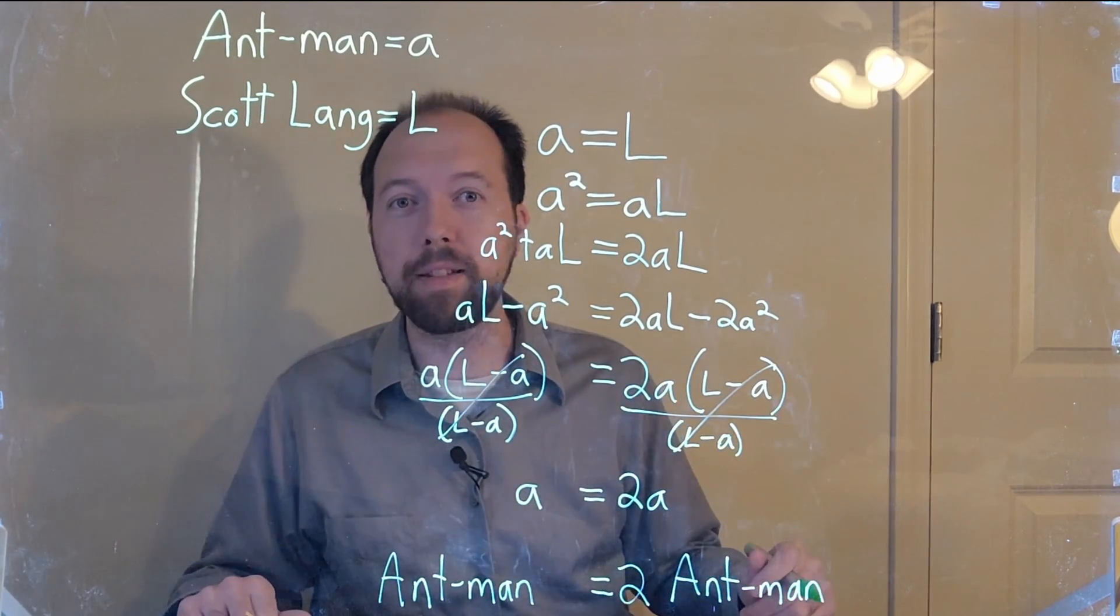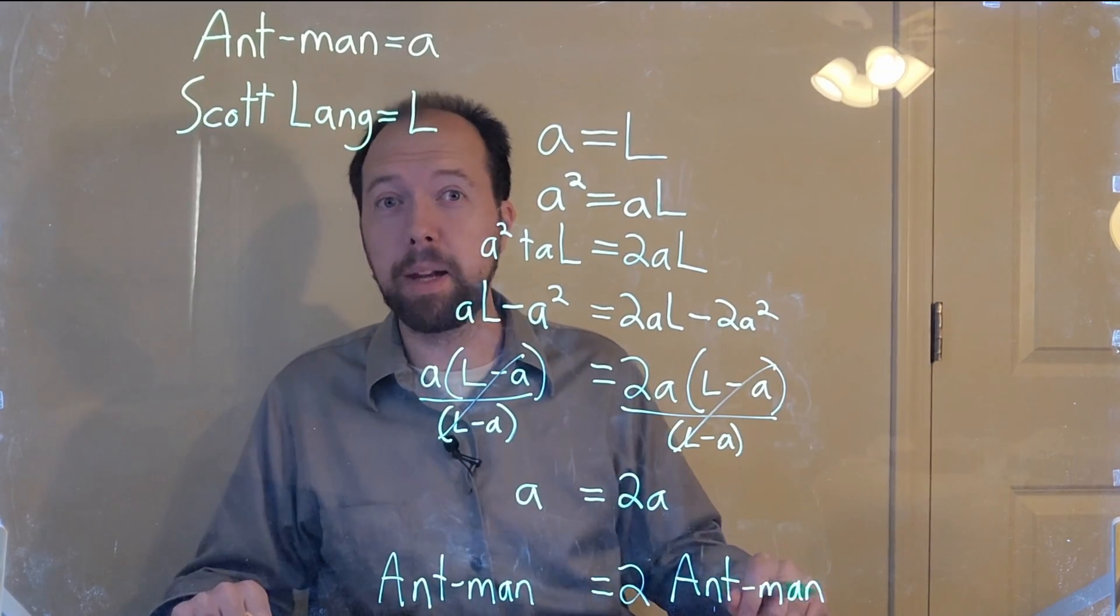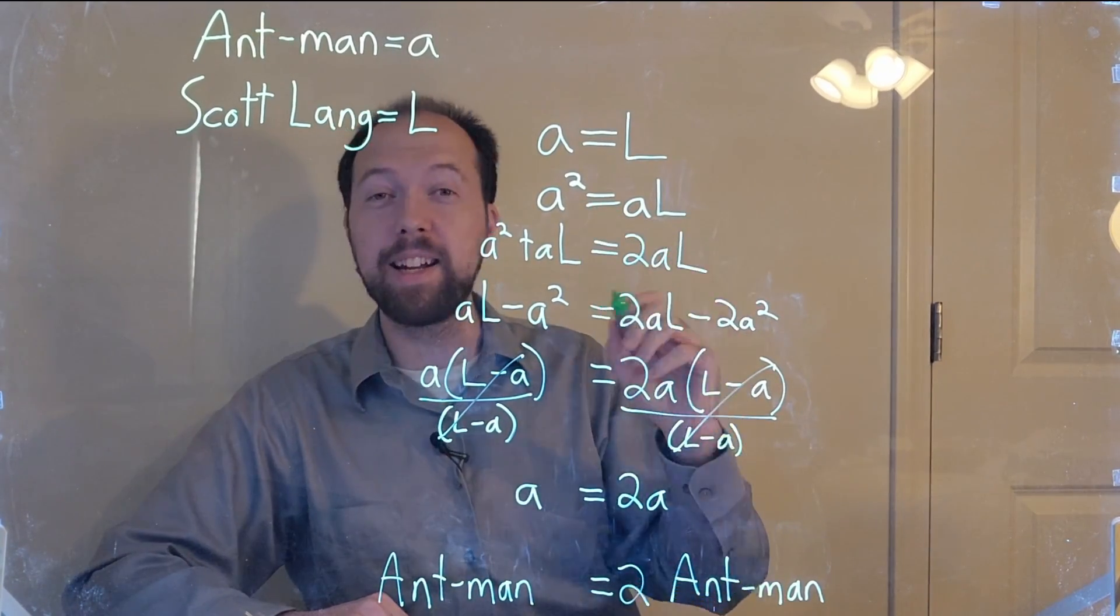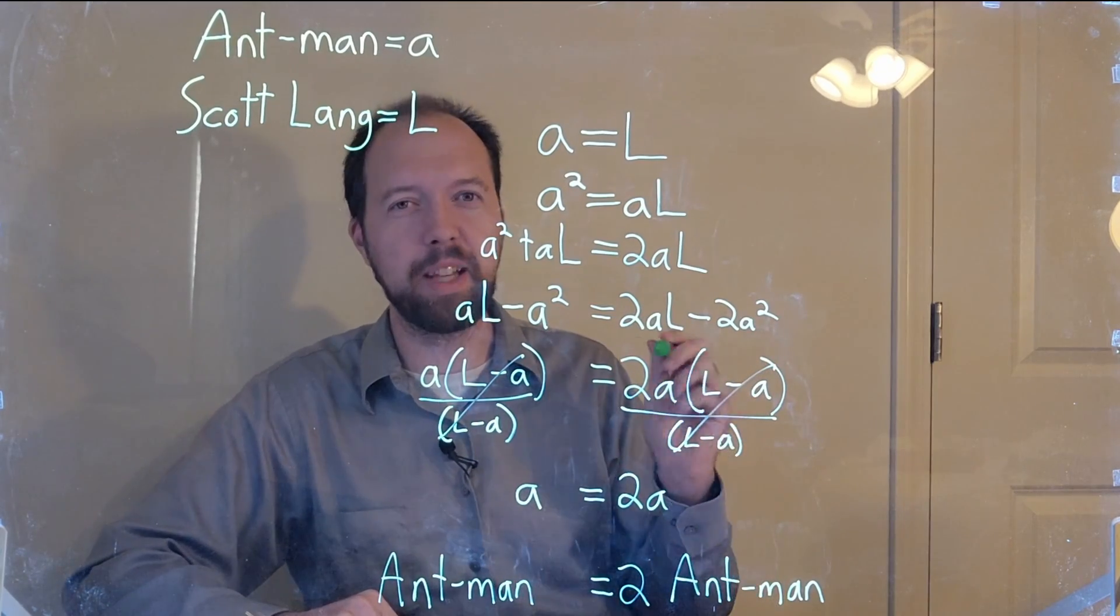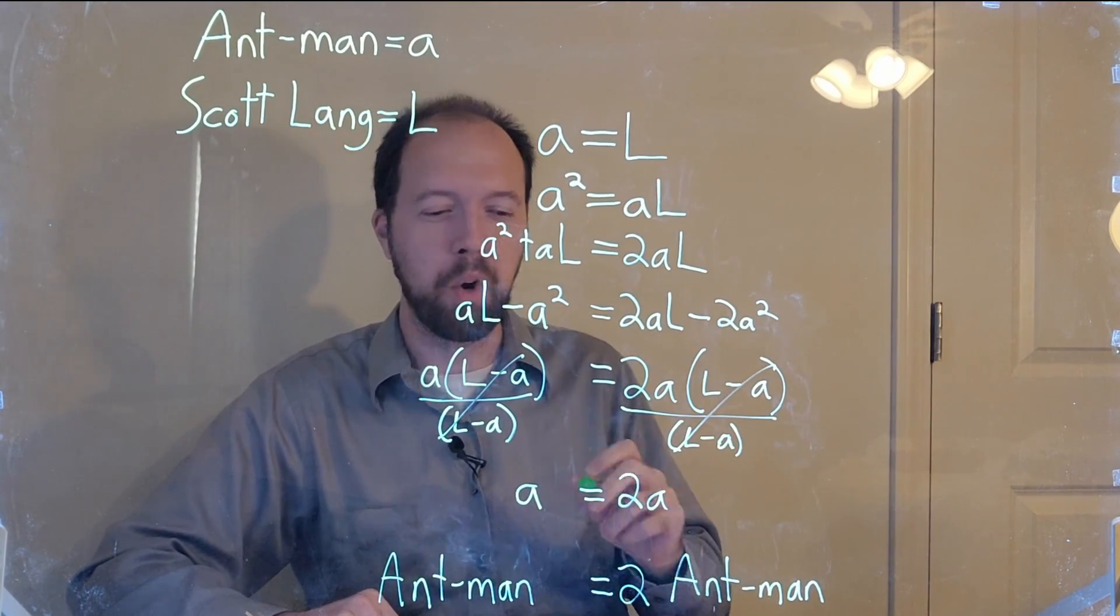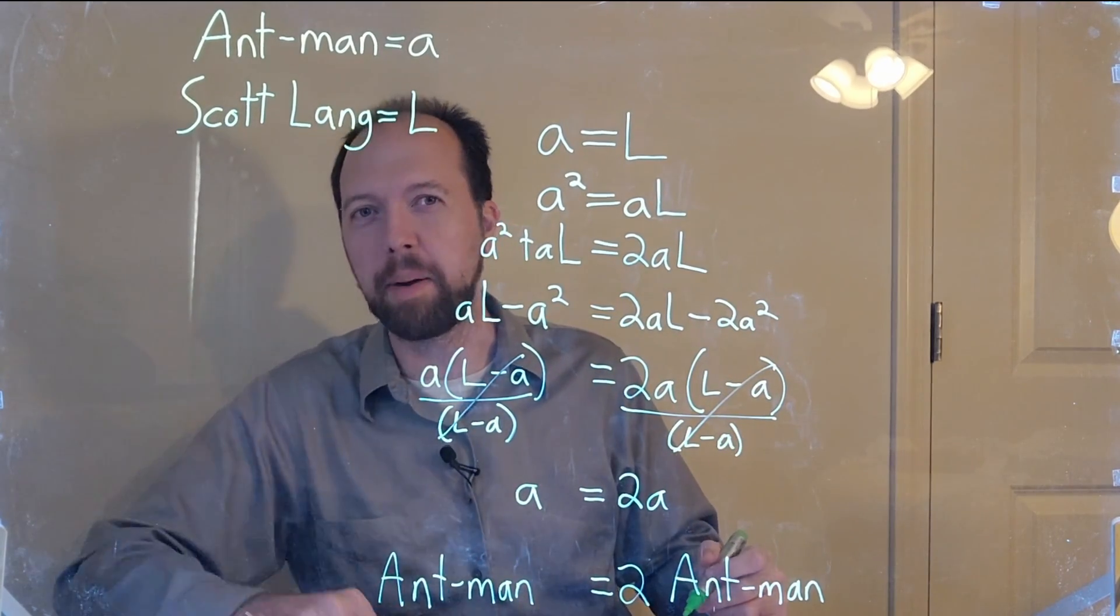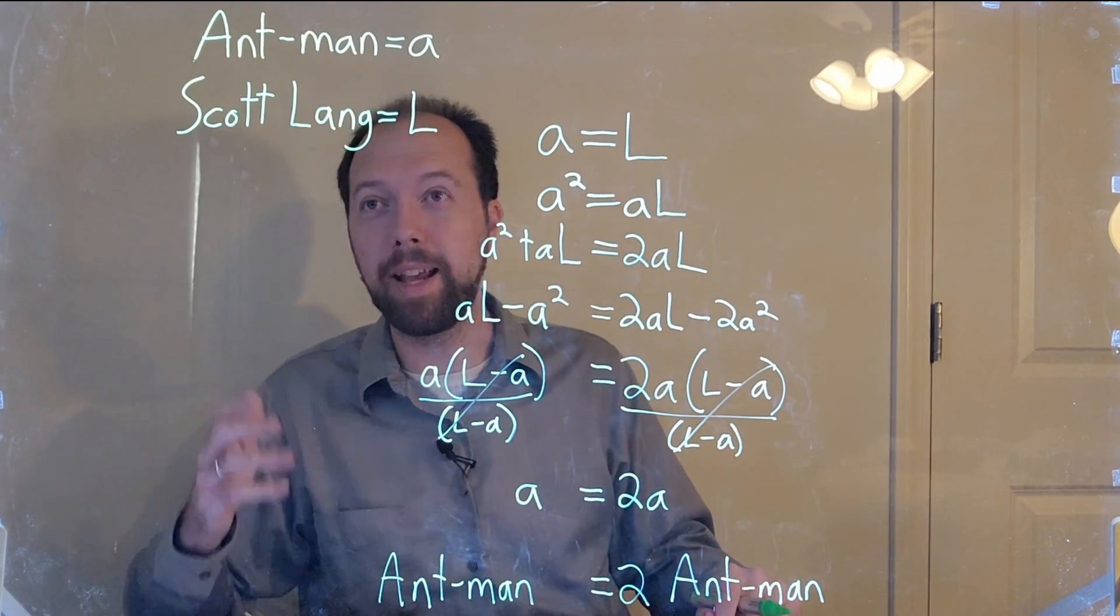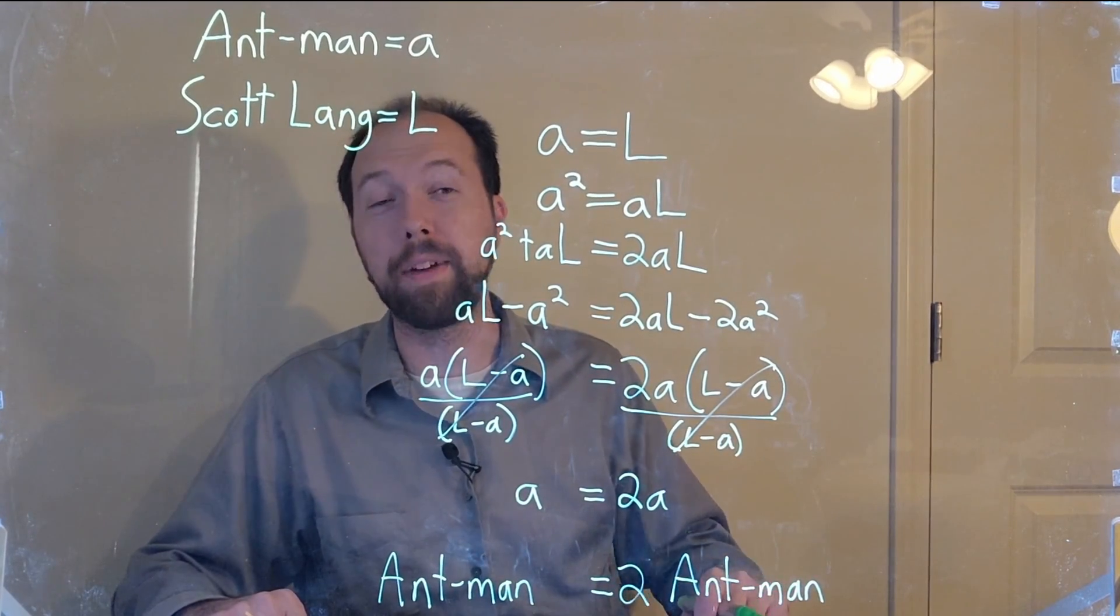He can just repeat this process over again, and he can duplicate himself at will. I think the math is pretty clear here. Everything I did in here was valid math concepts. But if you see what actually happened, why this equation worked out this way, let me know in the comments down below. But until then, I think we can assume that Scott Lang has the ability to duplicate himself as Ant-Man.